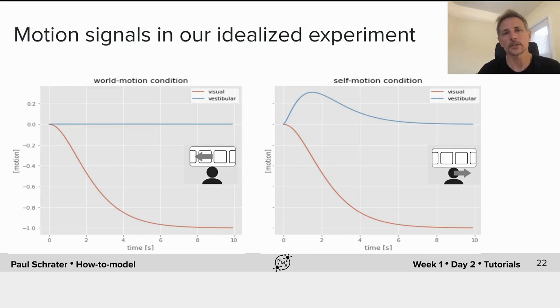Here I'm showing you the motion signals which our participants would have experienced. In the world motion condition, because you're not moving, the vestibular signal is flat, while the visual signal increases to a constant velocity. In the self motion condition, the vestibular signal is transducing acceleration, so it initially increases then decreases, while the visual signal is identical in both conditions.